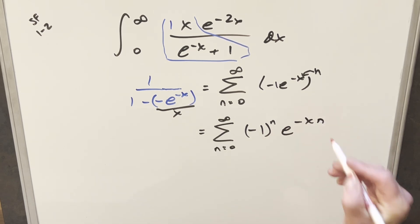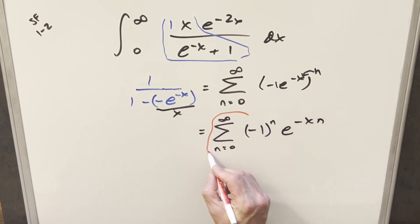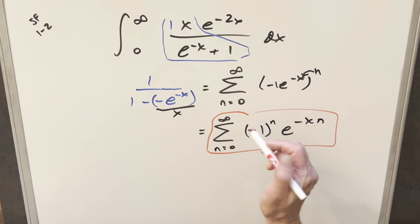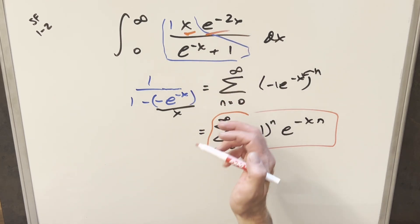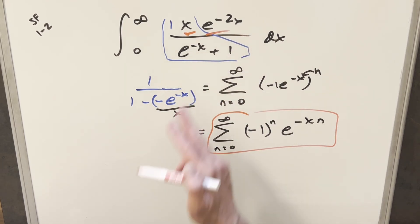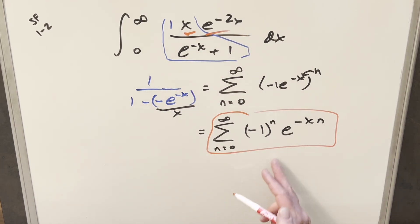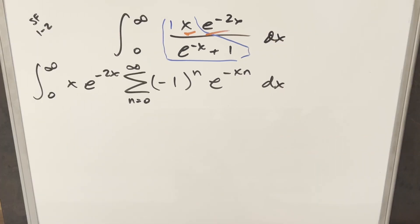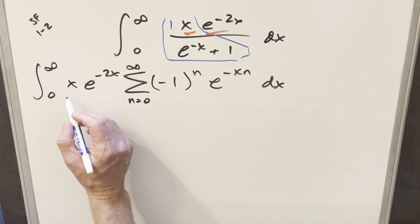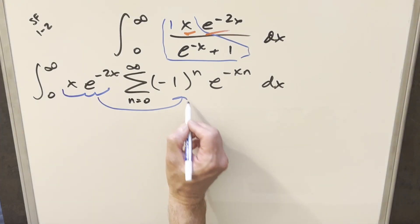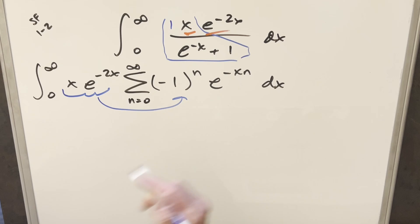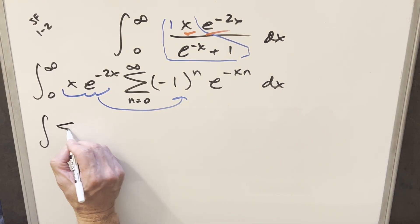Now let's take what we found and plug this back into our integral. We still have this x·e^(−2x) here multiplied in, and then we continue from there. All I want to do is take this stuff in front and multiply it inside the sum, so we get everything as one expression.